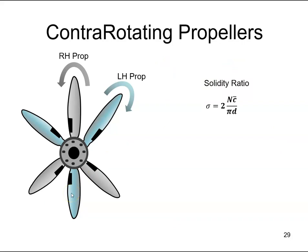Another benefit of counter-rotating propellers is the increase in solidity ratio. As we looked at in a different video, if we increase the number of blades, we increase the solidity ratio. So if we had a single propeller, we'd have three blades. If we have a counter-rotating propeller, that goes to six, so we double the solidity ratio.